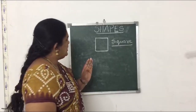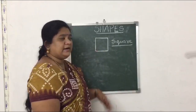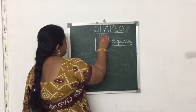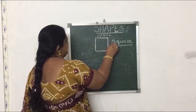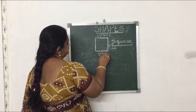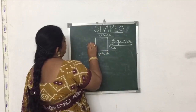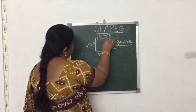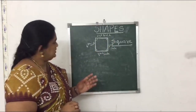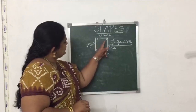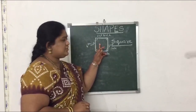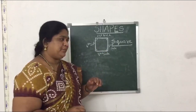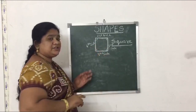Say square. Once observe this, children. Like rectangle, it has 4 sides — first side, second side, third side, and the 4th side. And it has 4 corners too. What does it look like? These look like a carrom board also, no? The carrom board is also in square shape.